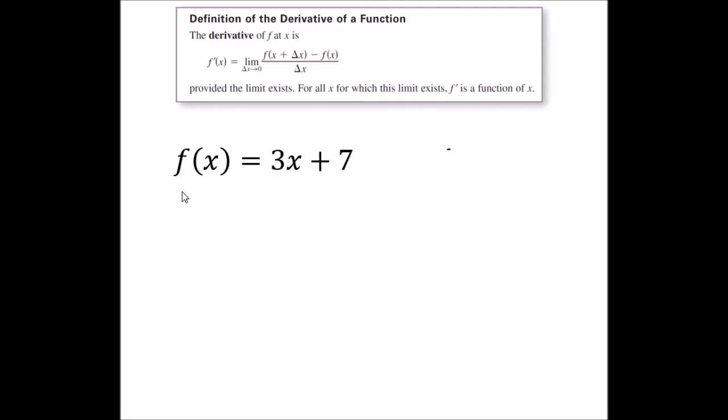Okay, so let's first find f of x plus change of x. So what we're going to do is just put x plus change of x into the function. And we get 3 times x plus change of x plus 7. So that's the first part of the function, this is the f of x plus change of x.